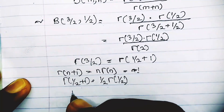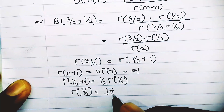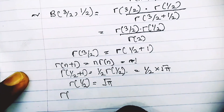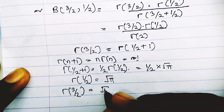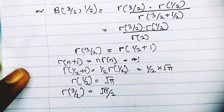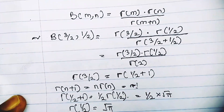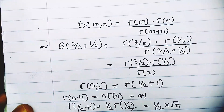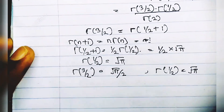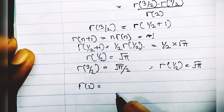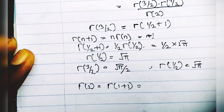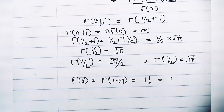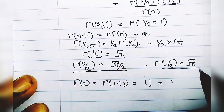We know that Γ(1/2) = √π. So Γ(3/2) = (1/2)·√π = √π/2. Next, Γ(1/2) in the numerator is also √π. For the denominator, Γ(2) = Γ(1+1) = 1! = 1.